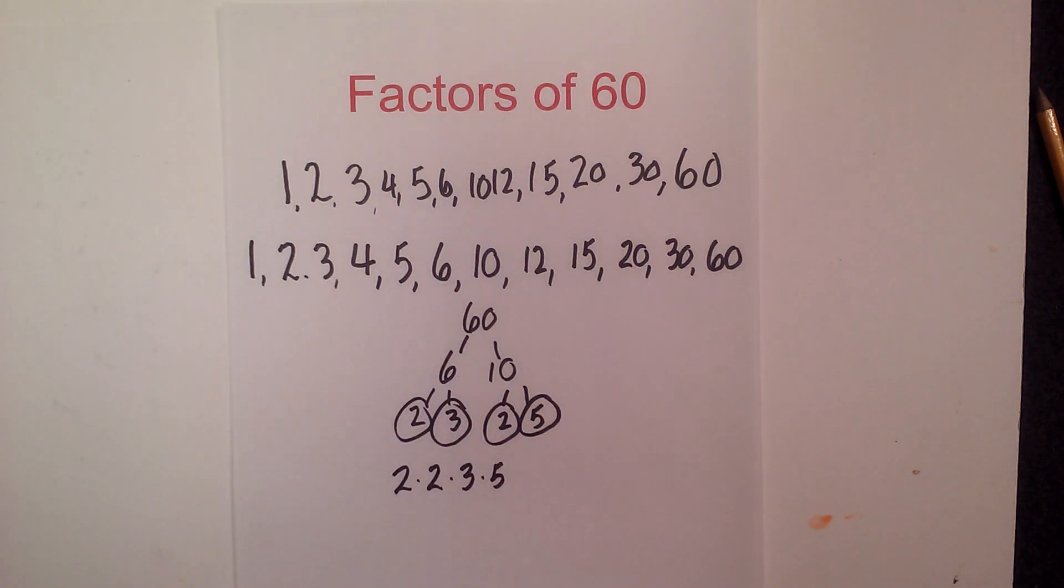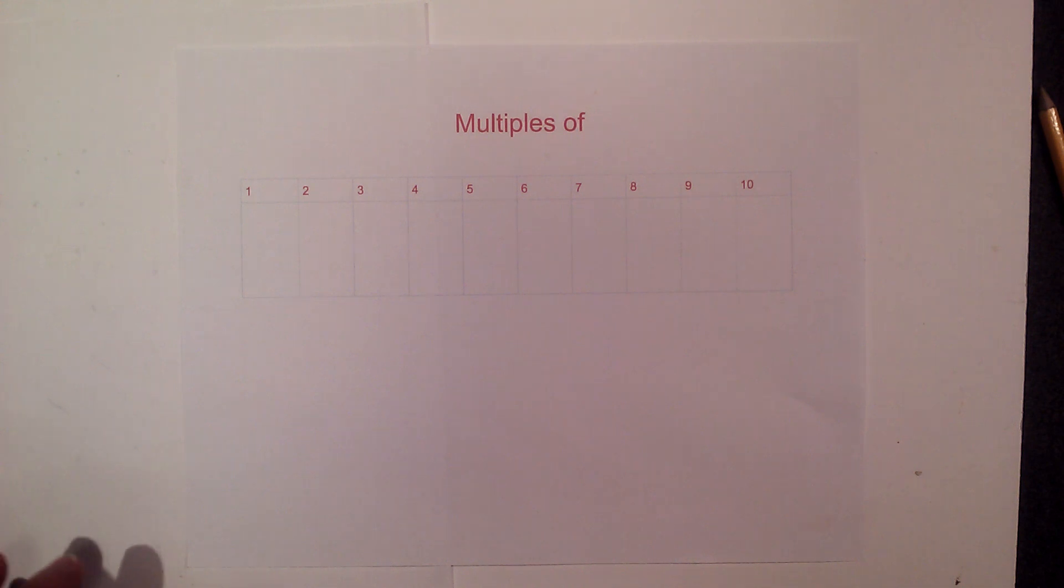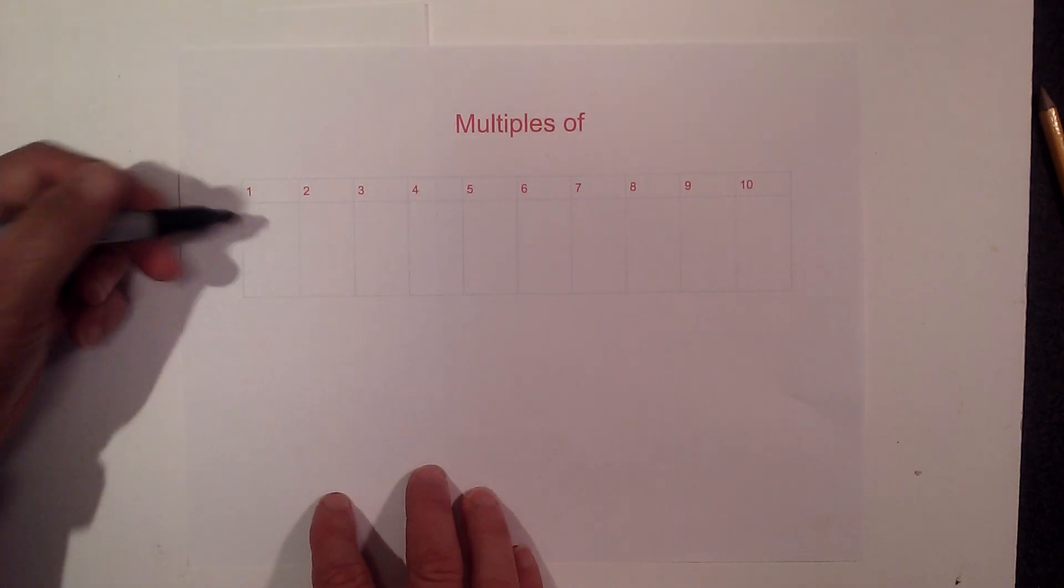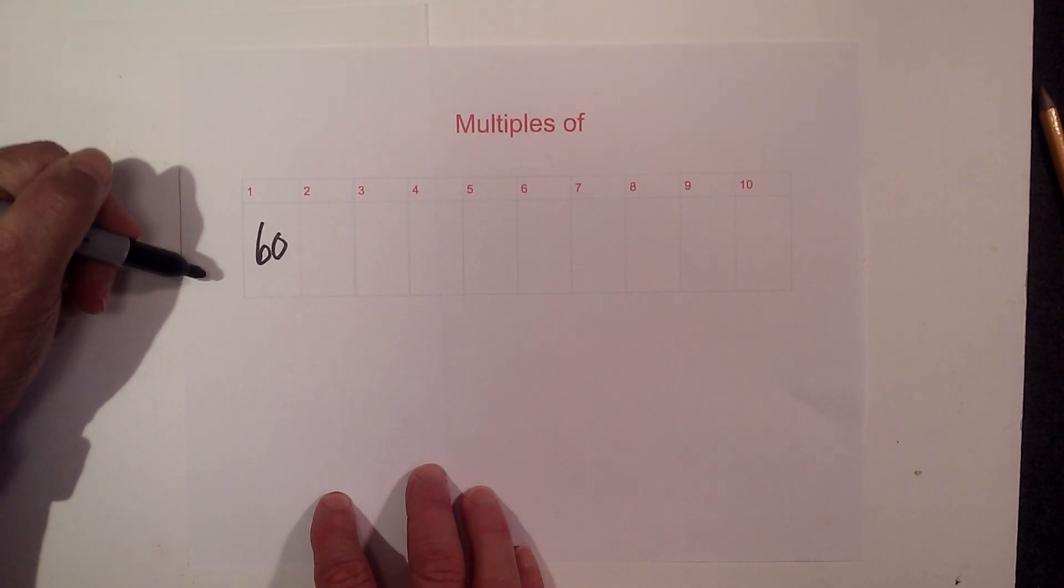Okay, now let's look at the multiples of 60. I'll go through and write down the multiples of 60 up to 10. So 1 times 60 is 60.